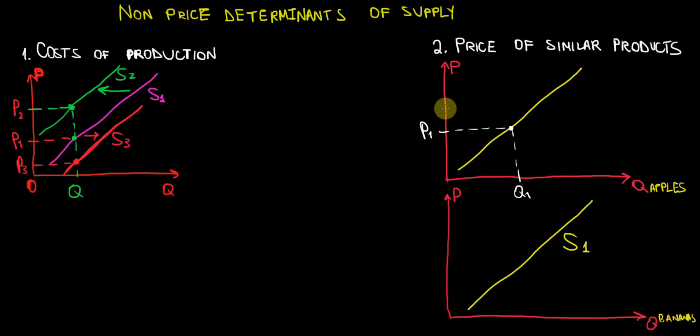Let's say that that increase in demand causes the price of the apples to increase on the market. So with a higher price, we can see that there is a movement along the supply curve where the firms get to produce Q2. There is an increase in quantity supplied of apples.